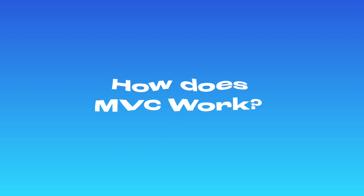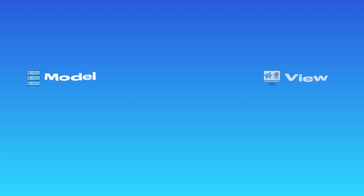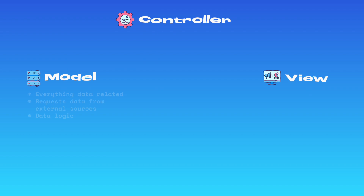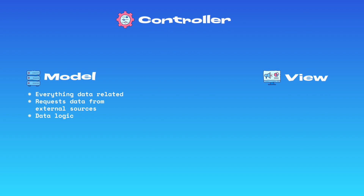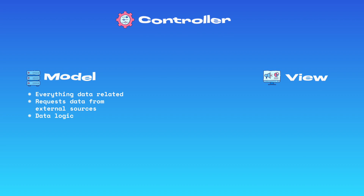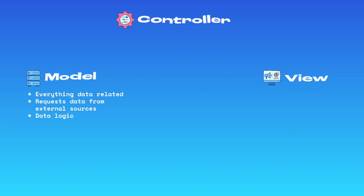MVC is made up of three distinct types of components, which are the models, views, and controllers. First up, we have the model component. This type of component is responsible for all things data-related — it's the component that manages and handles the data for a given application. Models typically hold the logic responsible for retrieving information or data from a database, or perform some filtering or sorting algorithms on that data. So anything data-related should be found in a model.